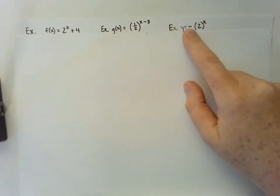For the third example, it has a negative in the front, so this one reflects over the x-axis, and the base value of 2 makes this one a growth function.